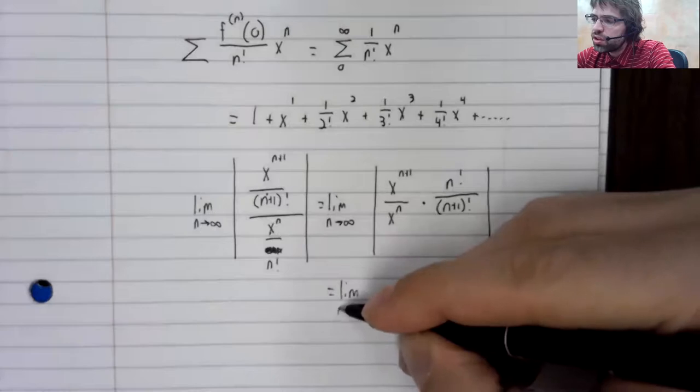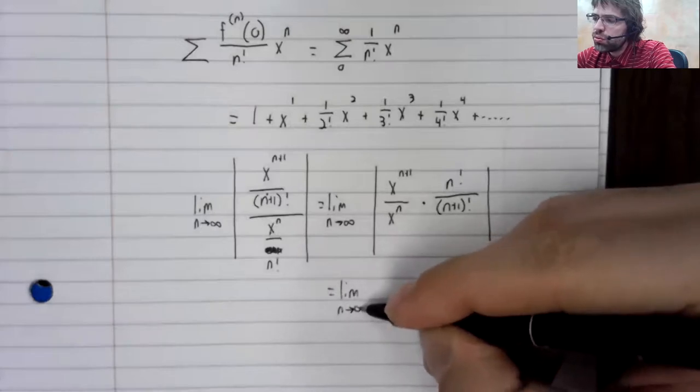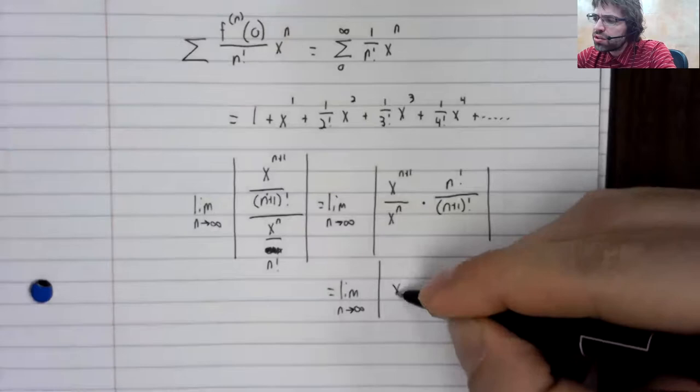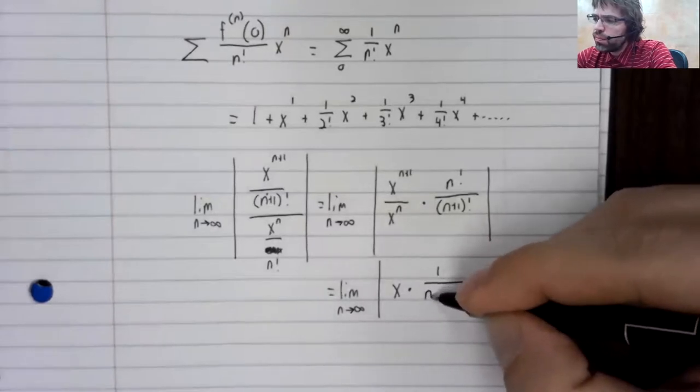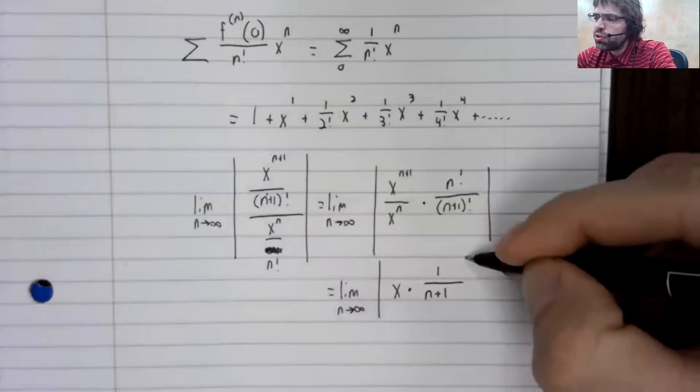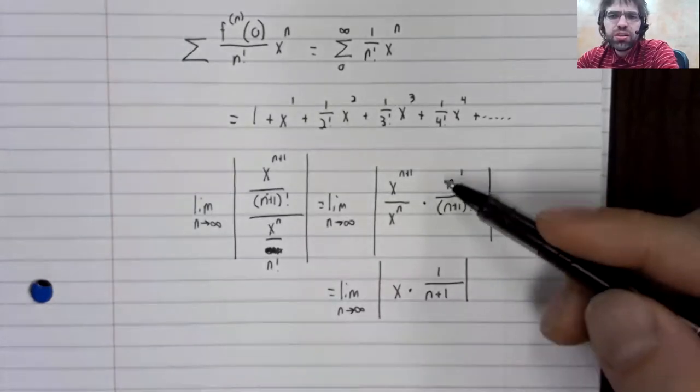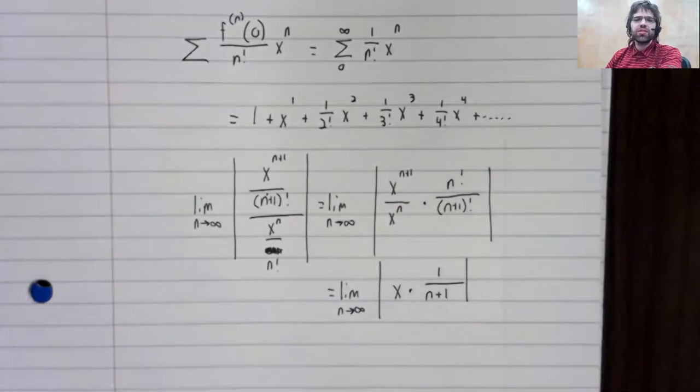So the limit as n goes to infinity of x times one over n plus one. That's how these factorials cancel.